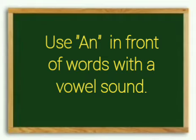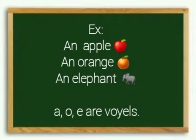Use An in front of words with a vowel sound. An apple, an orange, an elephant. A, O, E are vowels.